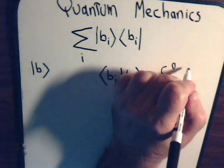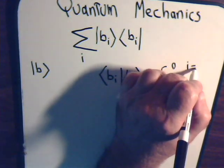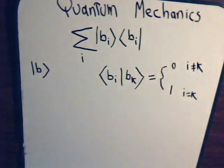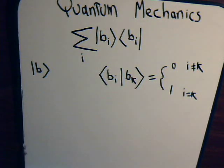If i does not equal k, so we're taking the inner product of two different vectors, then it's zero. So these are orthonormal set of vectors.